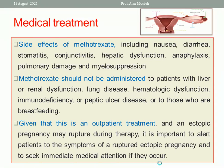Side effects of methotrexate include diarrhea, nausea, conjunctivitis, stomatitis, and renal dysfunction. Serious complications include anaphylaxis, pulmonary damage, and myelosuppression. Methotrexate should not be administered to patients with liver or renal disease, lung disease, hematologic dysfunction, immune deficiency, peptic ulcer disease, or breastfeeding women. Since this is an outpatient treatment, patients must be alerted to symptoms of rupture and advised to seek immediate medical attention.